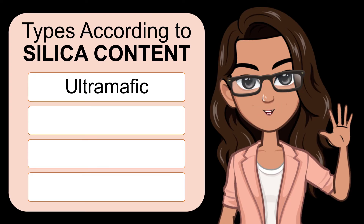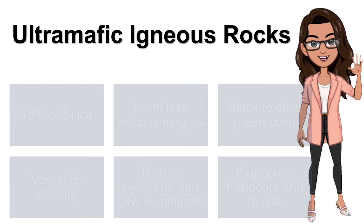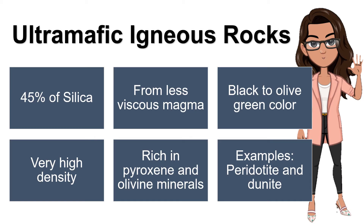Let's start with ultramafic. Ultramafic Igneous Rocks have a very low silica content of less than 45% silica. Before forming into Igneous Rocks, its magma has very low viscosity. Its color ranges from black, like peridotite, to olive green, like dunite. Their density is very high, and they are rich in pyroxene and olivine minerals. Examples of these rocks are peridotite and dunite.